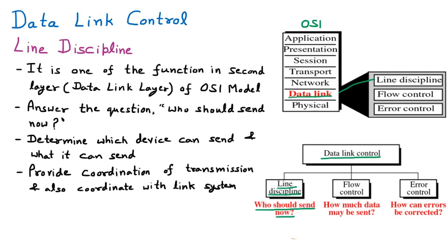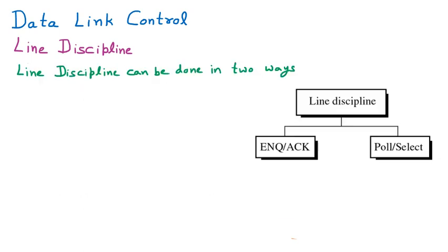Line discipline can be achieved in two ways. The first one is called ENQ/ACK, that is, Inquiry and Acknowledgement.